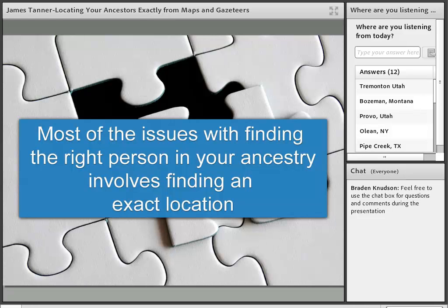Another example from FamilySearch Family Tree: a line of ancestors in Virginia, supposedly my direct line, each successive generation born in Shepherdstown, Virginia — which is now in West Virginia. Unfortunately, the dates go back long before Shepherdstown was founded. The first settlers arrived after the time when these ancestors were supposed to have been born there. This is a real issue of identifying the exact location of an event.